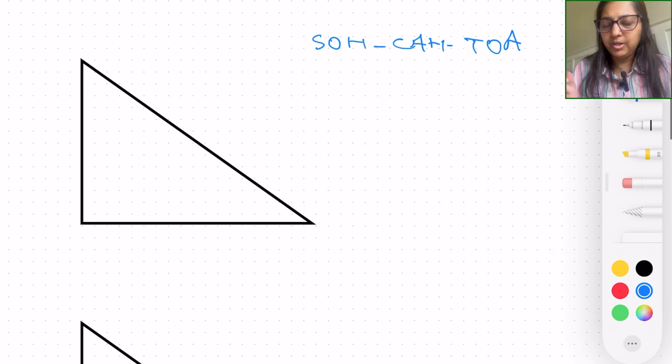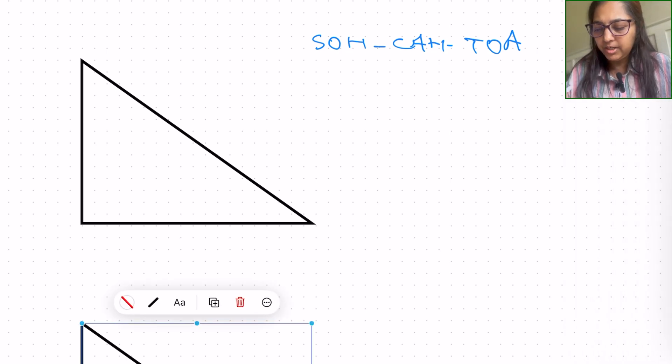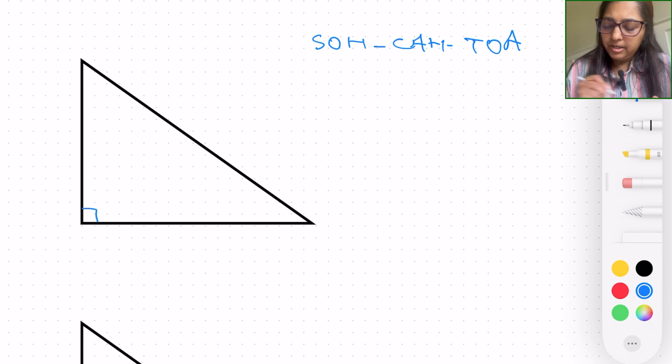Let's first take a look at the triangle, understand what all this is, and then we'll get back to the abbreviation. As you can see on the screen, there's a right angle triangle that I have right here.